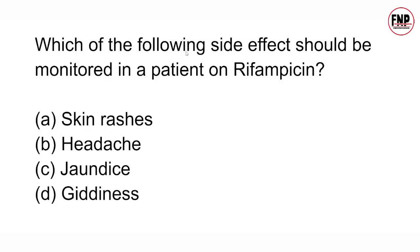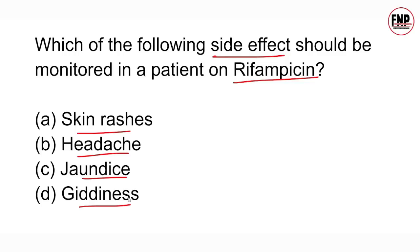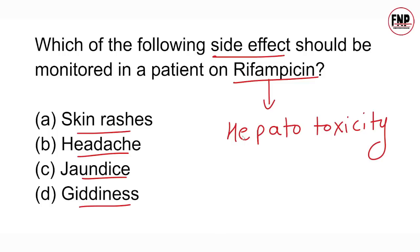Question 24: Which side effect should be monitored in a patient on Rifampicin? Options: Skin rashes, Headache, Jaundice, Giddiness. Rifampicin एक antibiotic group की medicine है जो TB जैसी disease के treatment में इस्तेमाल होती है। Rifampicin drug hepatotoxicity cause कर सकती है — और liver में problem होने पर client में jaundice जैसी finding develop हो सकती है। So, rifampicin drug can cause jaundice — Option C is correct.